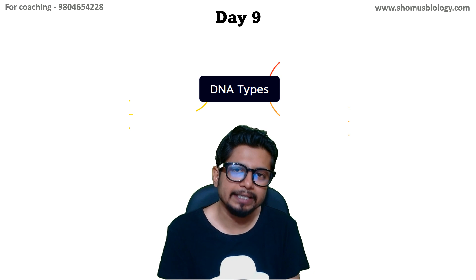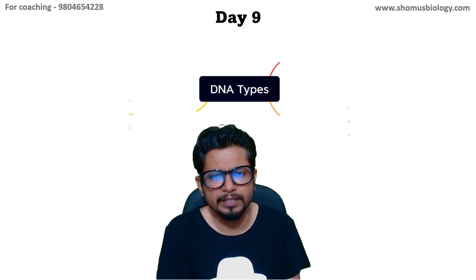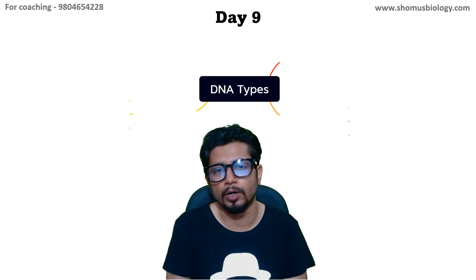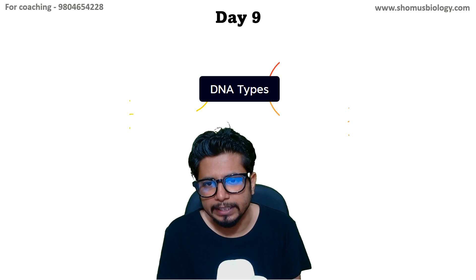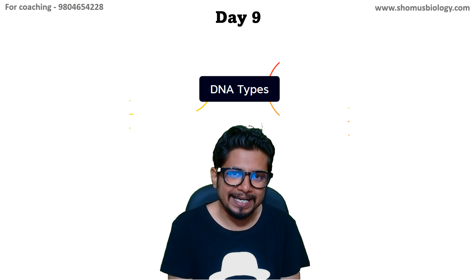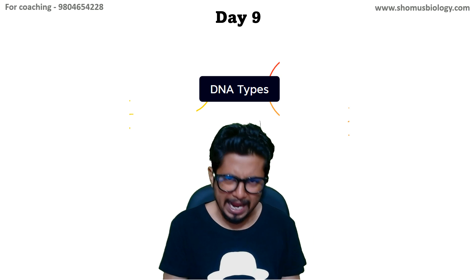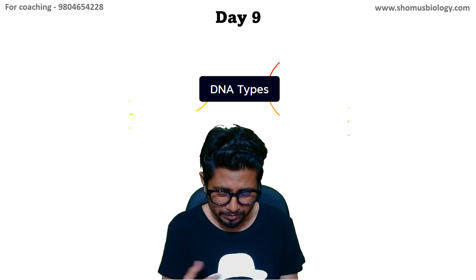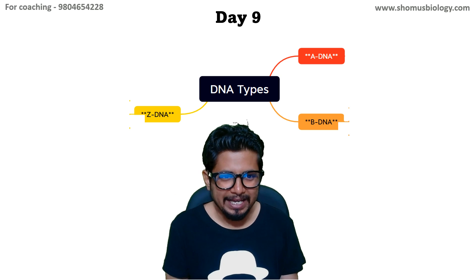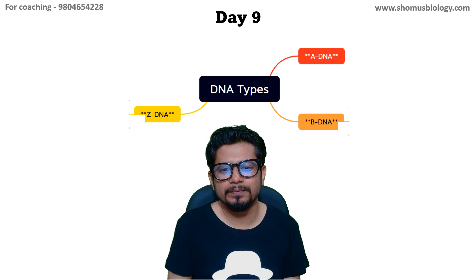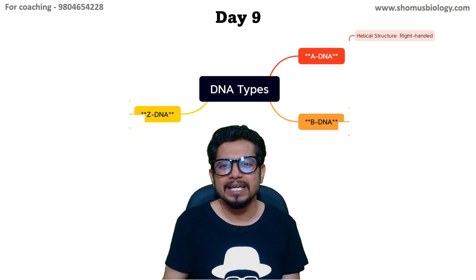This is Day 9, and in Day 9 we are going to talk about another important macromolecule — probably the most important — that is DNA. There are three types of DNA you probably know: A-DNA, B-DNA, and Z-DNA. We'll look at what those are and some properties of each.